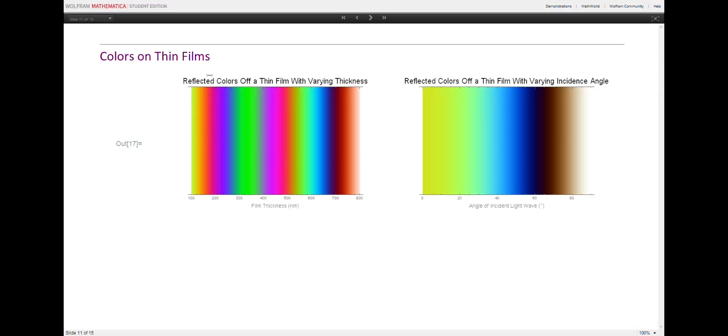First, with a constant incident angle of 45 degrees, and second, with a constant thickness of 200 nanometers. Notice that with varying thickness, the color shifts alternate between reddish, greenish, and bluish colors, while for varying angle, the spectrum is a more gradual gradient.